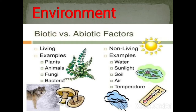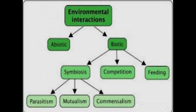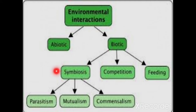Today we discuss the biotic component. 'Bio' means life, so all the living components of the environment are called biotic components — for example, plants, animals, fungi, and bacteria. Organisms in the biotic environment interact with other organisms by feeding on them, competing for food, water, light, air, and minerals, or by providing shelter and protection. This interaction is called symbiosis.